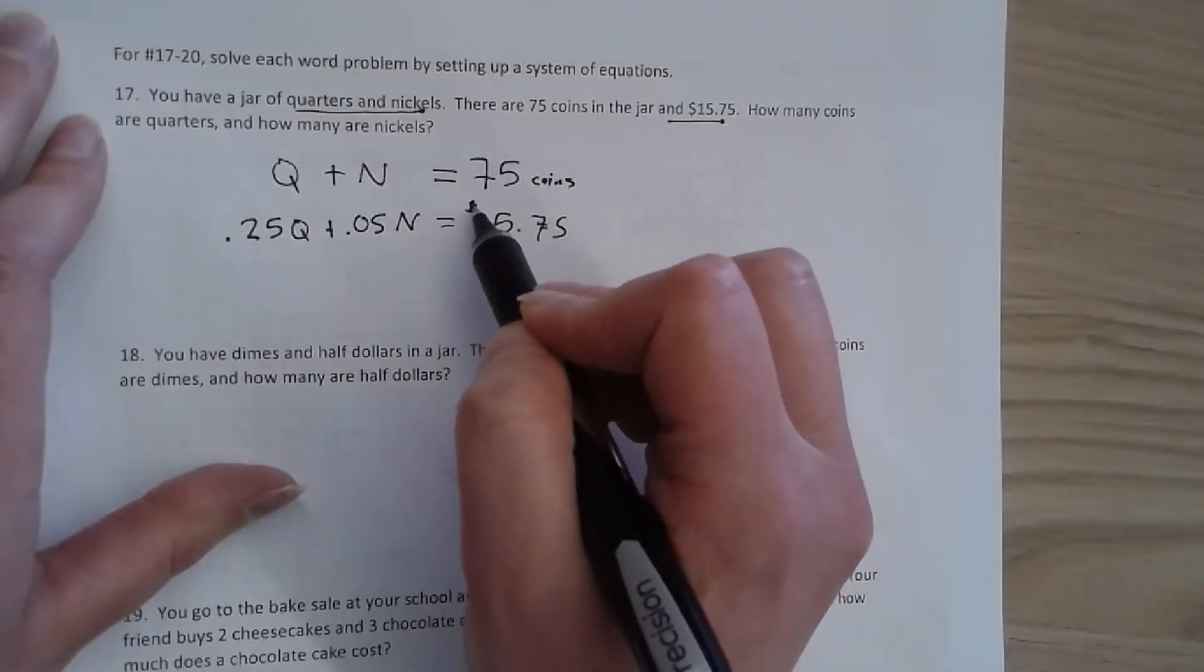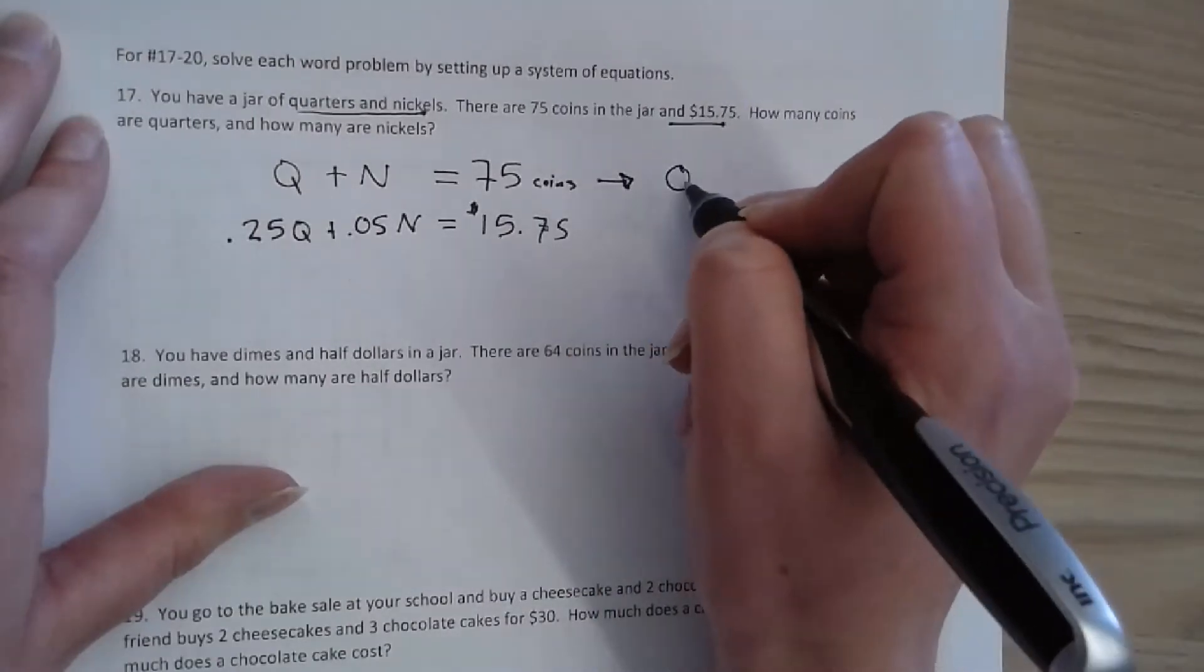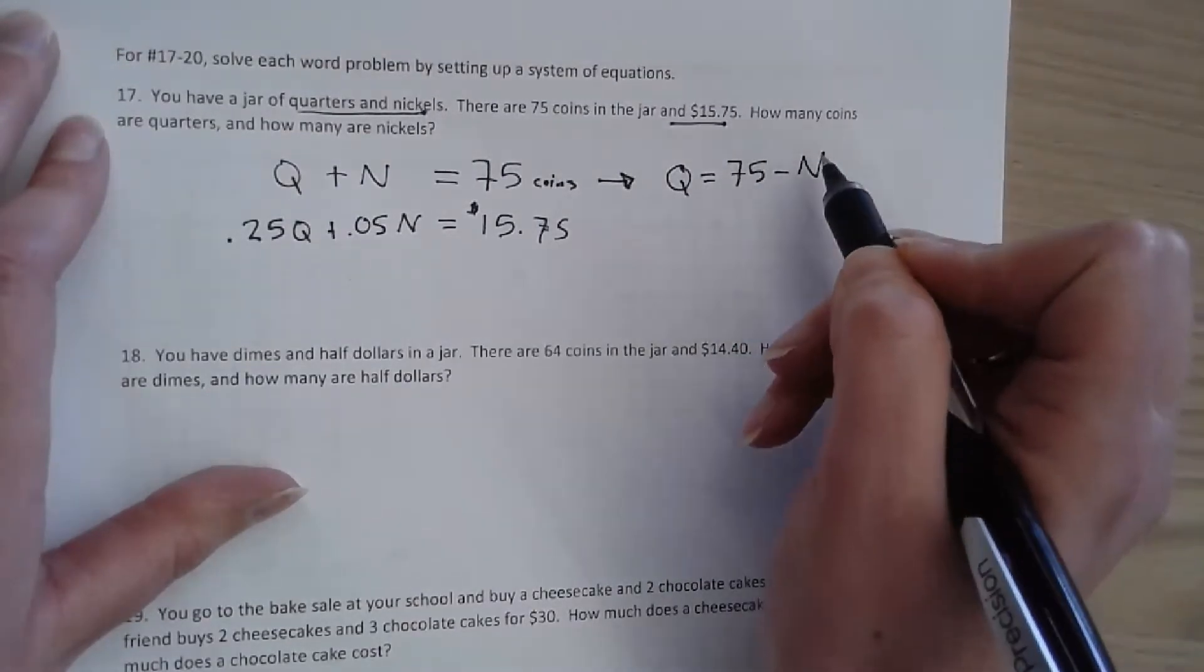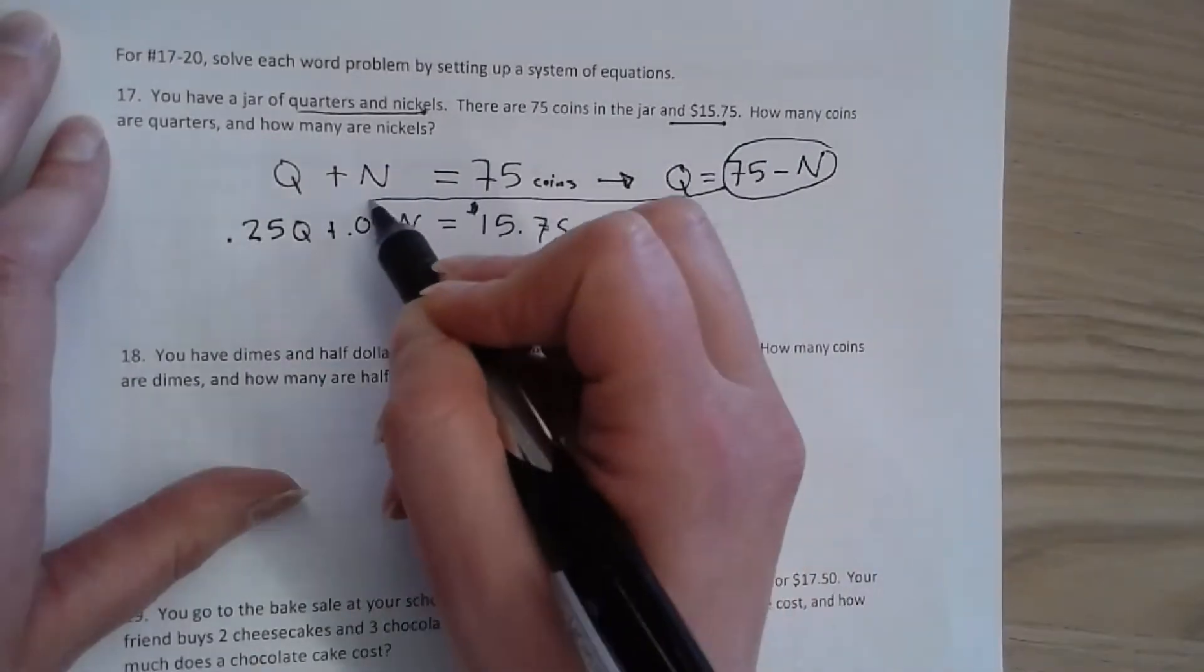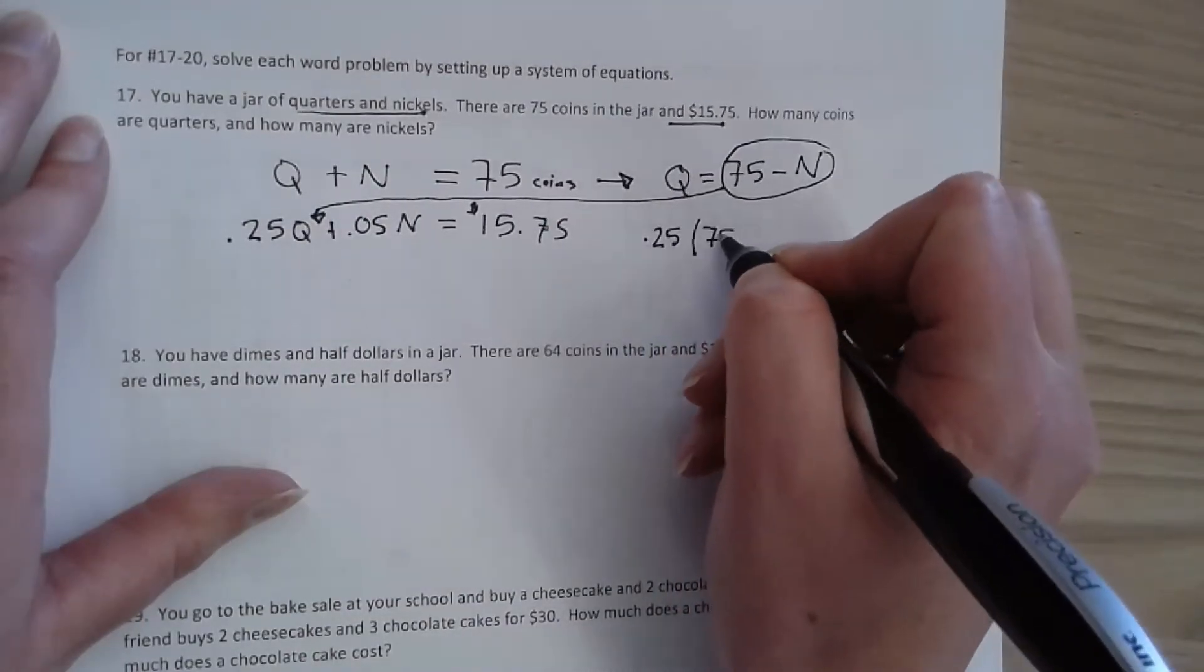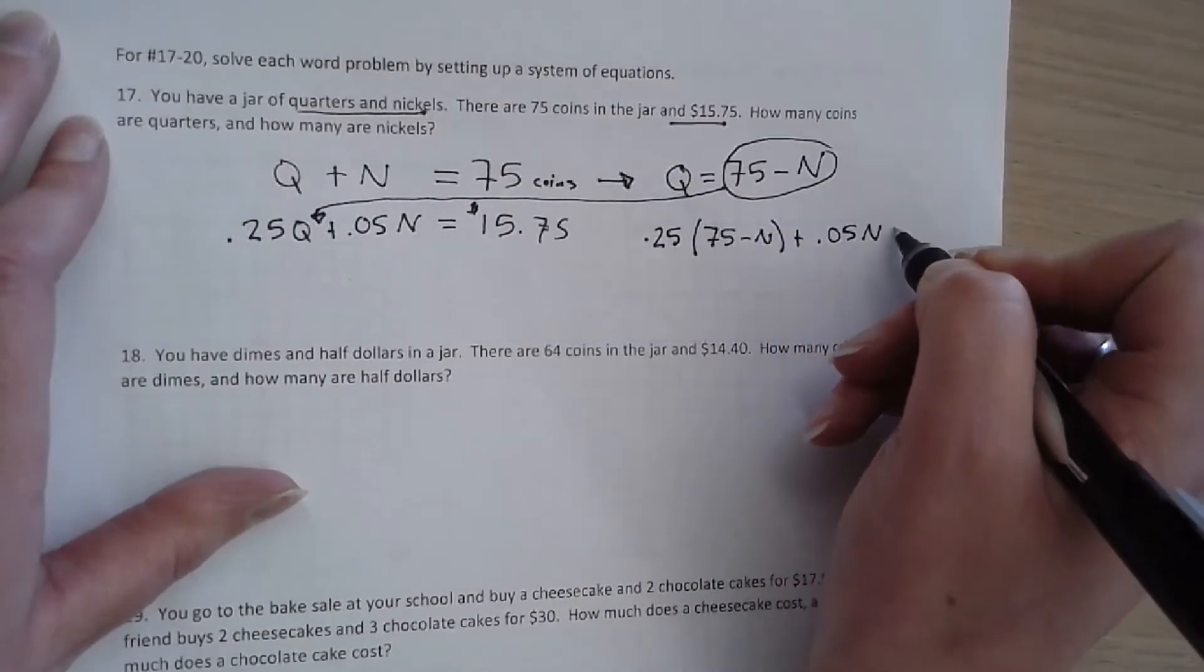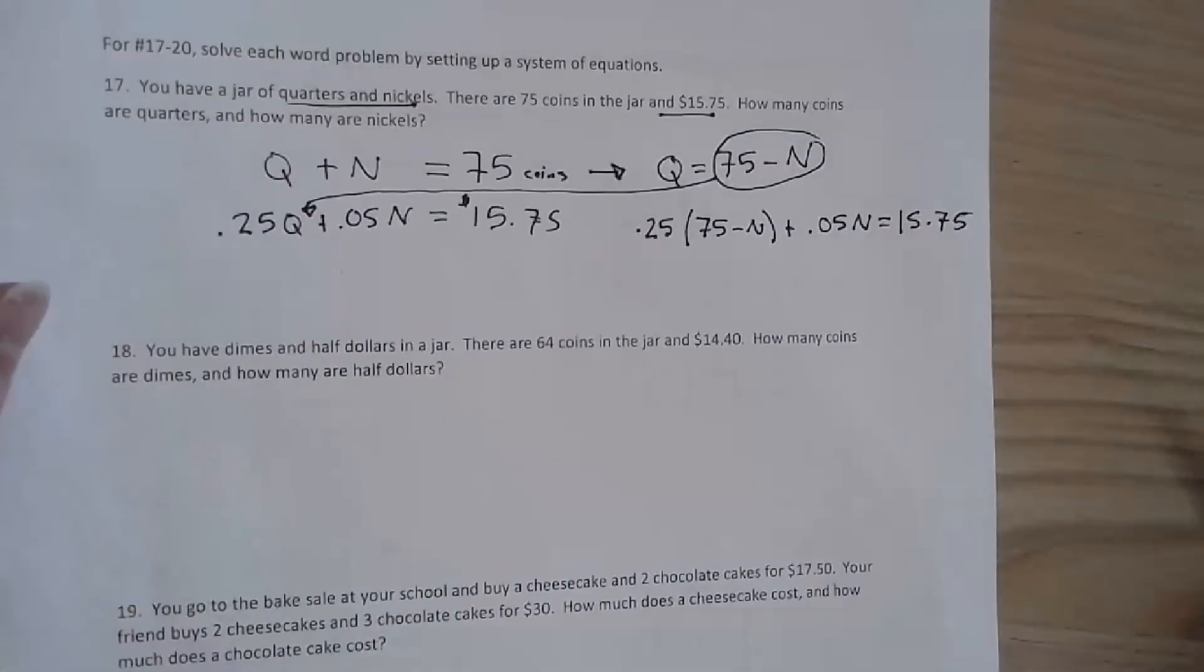From here we could take our equation up here and we could solve for q. Q equals 75 minus N. With that we can now use substitution and take this and plug it in for q. So 0.25 times 75 minus N plus 0.05N equals 15.75. We can now solve for our N value, how many nickels we have, and then plug that back in and solve for quarters.